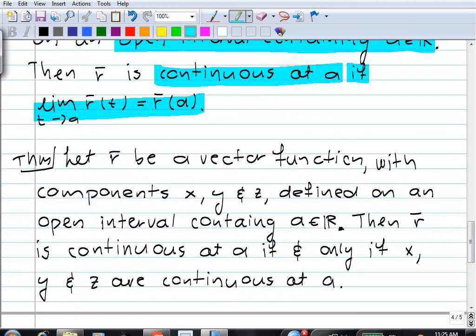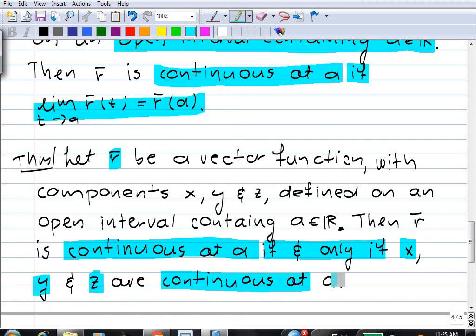Our vector function r will be continuous at a if and only if the three component functions are continuous at a. So that's the first example of how the fact that the limit of a vector function is determined by the limits of its components is used. It tells us that a vector function is continuous precisely when its component functions are continuous.